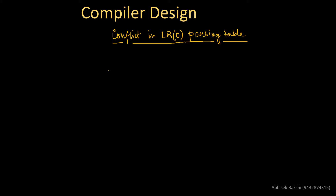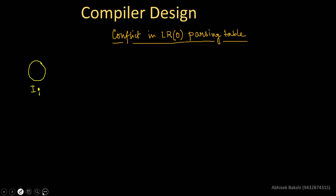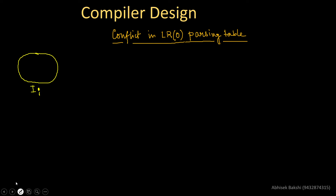To illustrate this, consider a very simple example. Assume we have some state i_i. From this state, suppose we have a production rule — let's draw it to make it clear. Say we have a production A → .a (dot before small a), and another production B → α. (dot at the end, meaning everything has been seen — this is the final item).